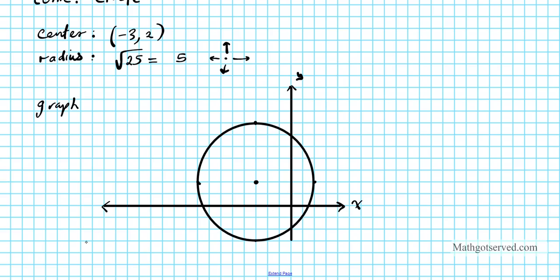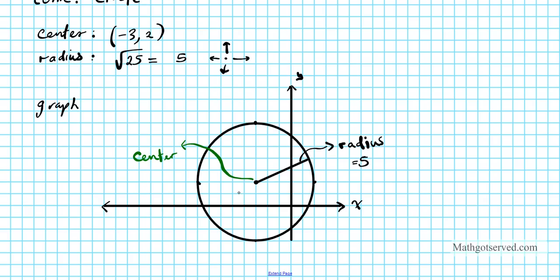Now we're going to label the graph. The only two things to label are the center and the radius. Draw the radius from the center to the circumference — the radius equals 5. The center is at (-3, 2). Of all the conic sections, the circle is the easiest one to label.